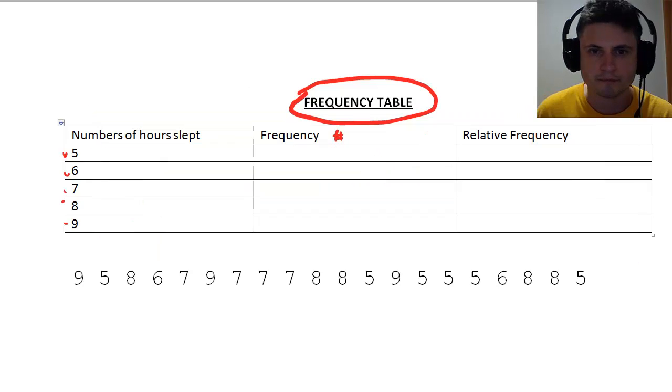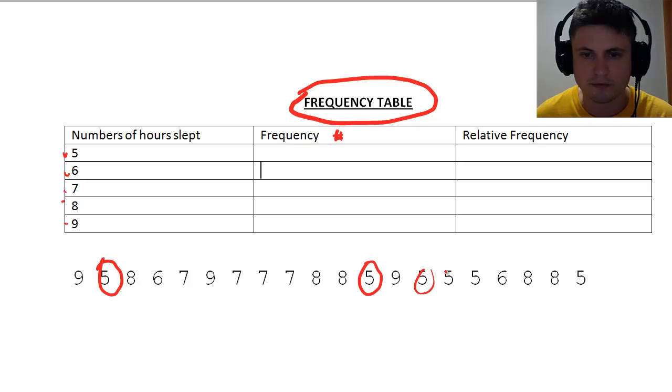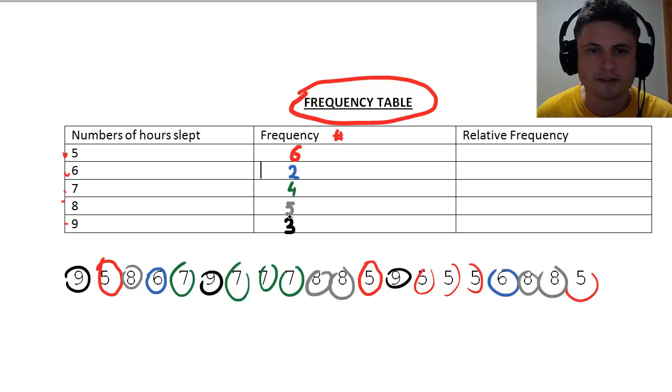And right here, I'm going to put frequency, or basically how many times each number appears in my data. If I look at number five, it appears once, twice, three, four, five, six times. So I can write six right here. And then let's do the rest of the numbers really quickly. This is the frequency of the numbers as they appear. You can already tell that most of the students at our school probably sleep five hours.